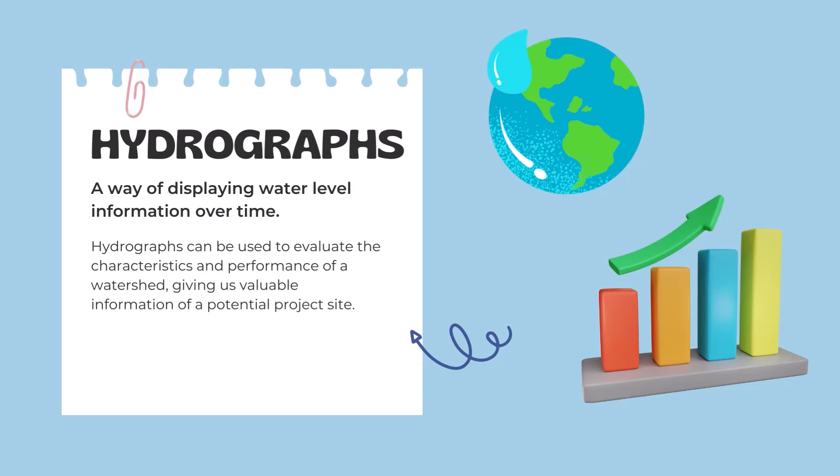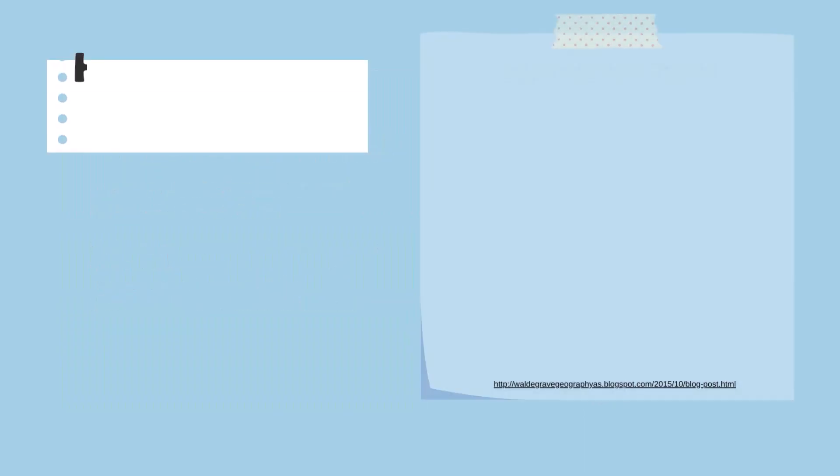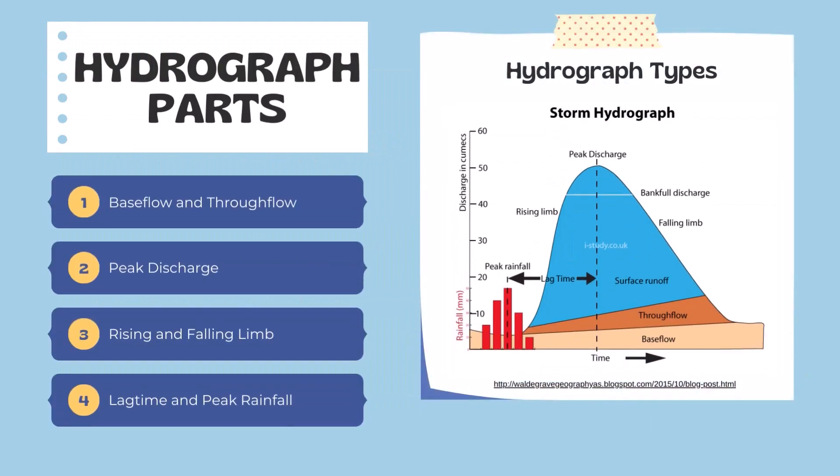What are the different parts of a hydrograph? As you can see by the diagram on the right, this is a typical storm hydrograph with many different components. We have the base flow and through flow. The base flow is the lowest flow of the watershed, usually occurring in the lower layers and is factored in when determining the runoff from a specific site.